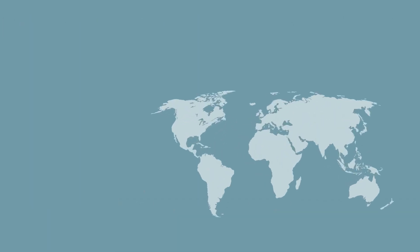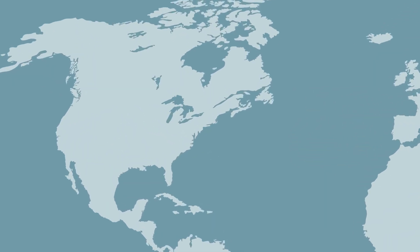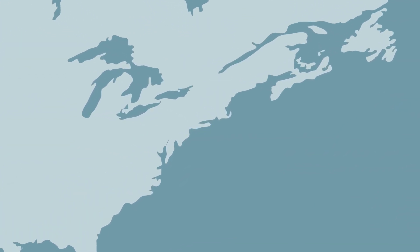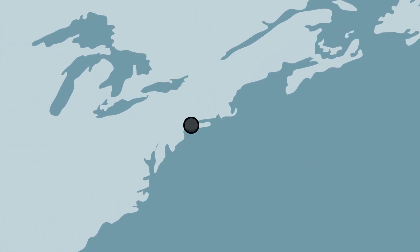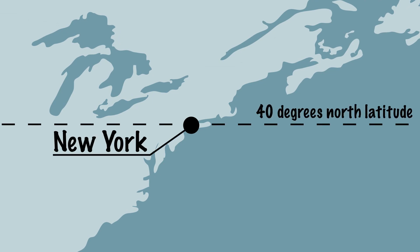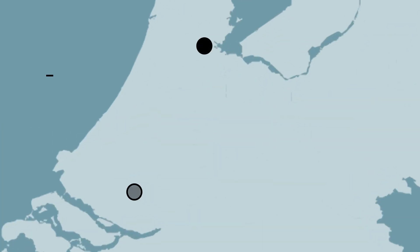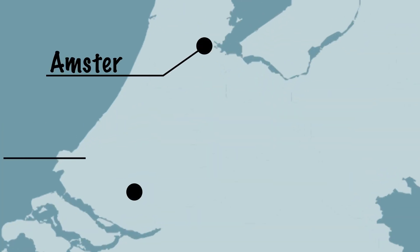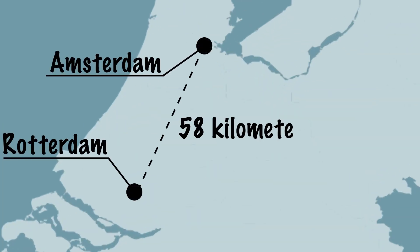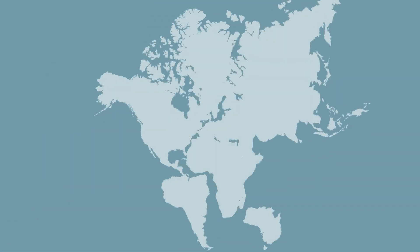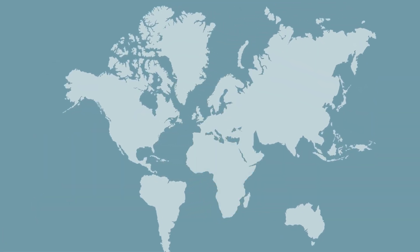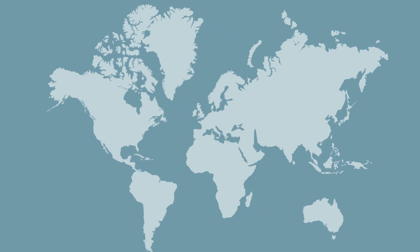The absolute location is the exact location of a place. You can specify this as latitude, for example. New York is located at 40 degrees north latitude and 74 degrees west longitude. You can also say that the distance between Amsterdam and Rotterdam is 58 kilometers. This distance only changes on a geological timescale if a place is moved by plate tectonics.